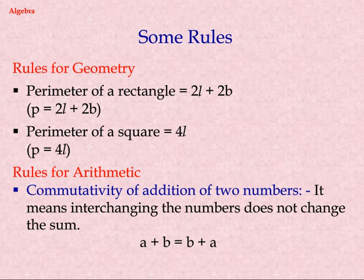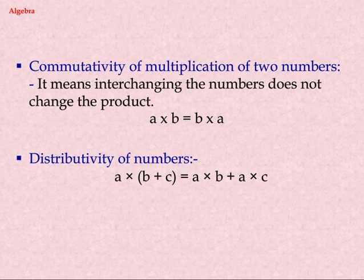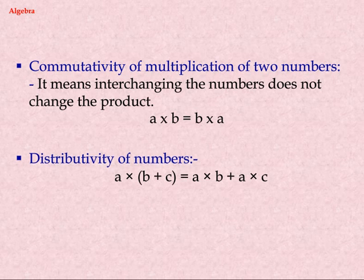Rules for Arithmetic. Commutativity of addition of two numbers means interchanging the numbers does not change the sum: A plus B equals B plus A. Commutativity of multiplication of two numbers means interchanging the numbers does not change the product: A into B equals B into A. Distributivity of numbers: A into (B plus C) equals A into B plus A into C.